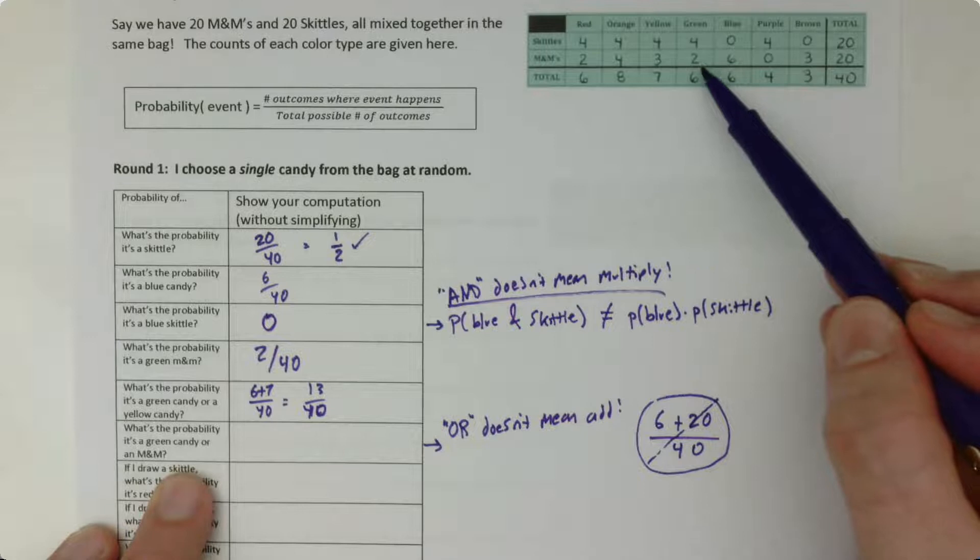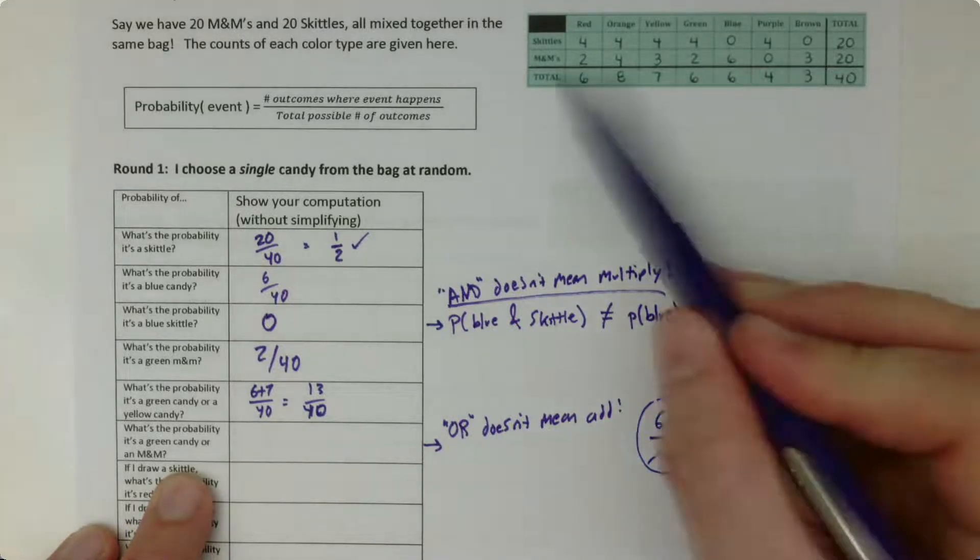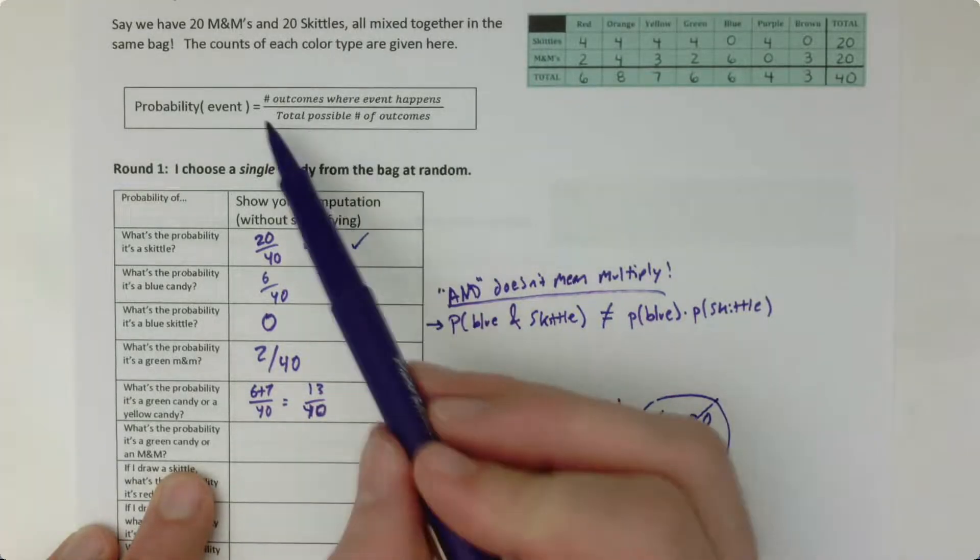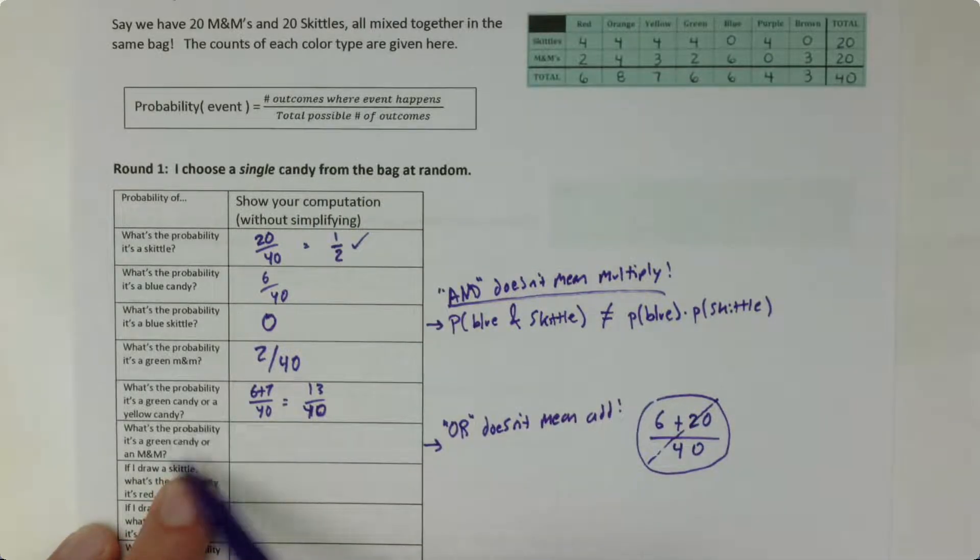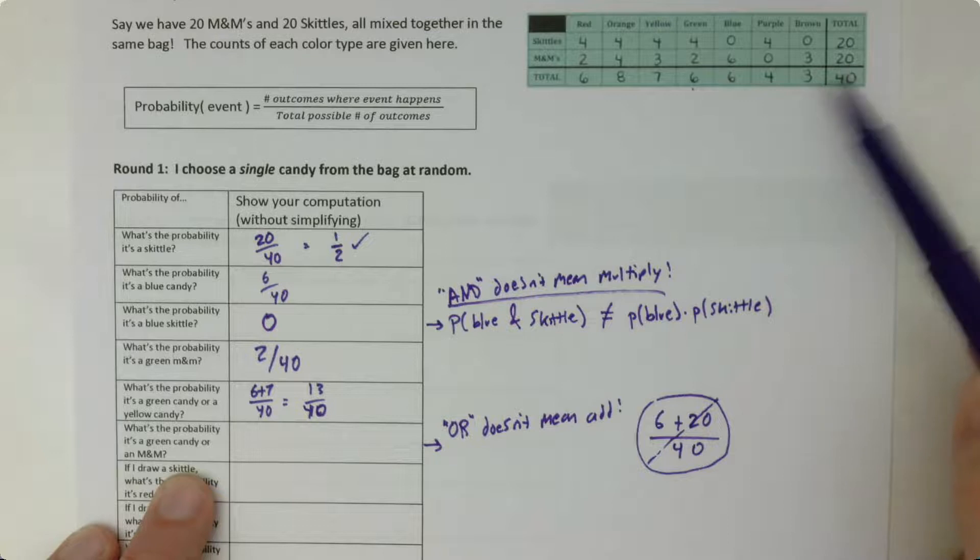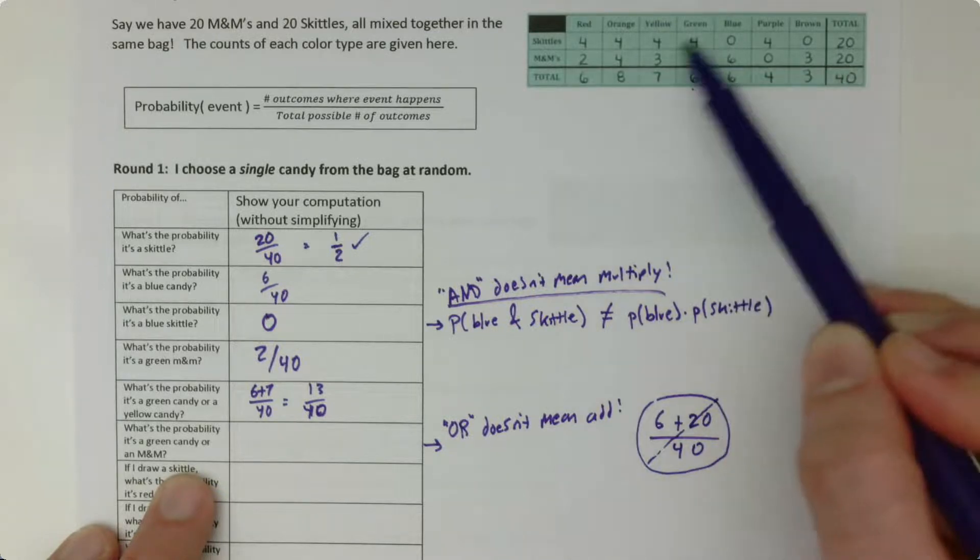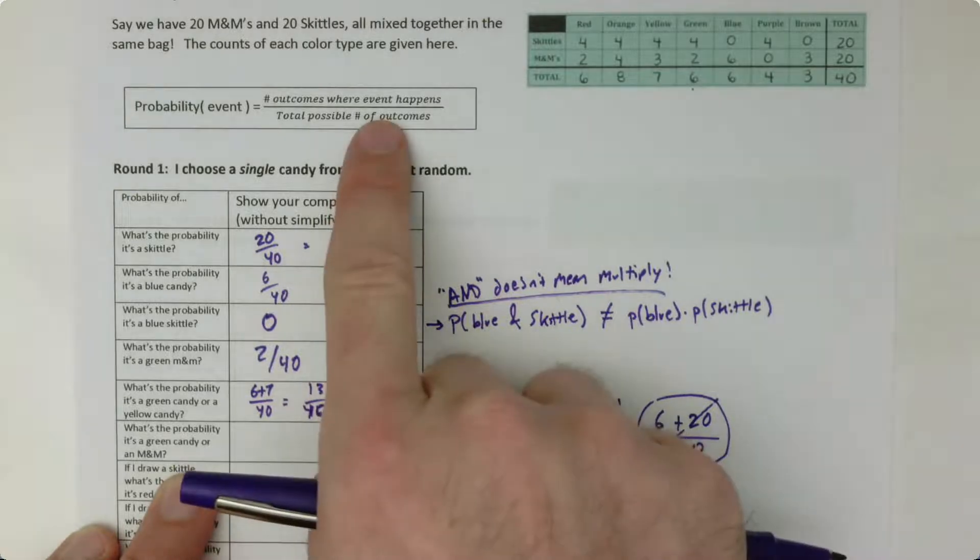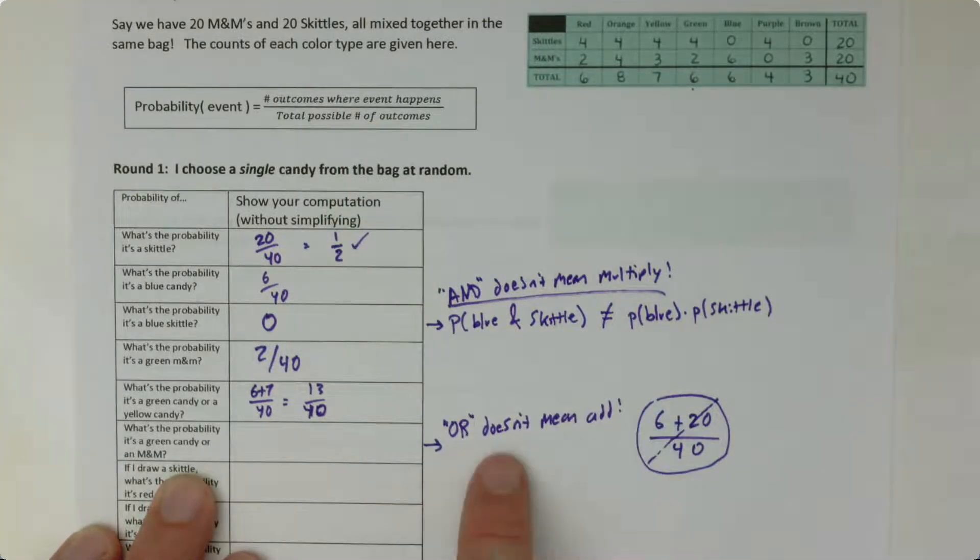The problem here is that we have counted the 2 green M&Ms twice. So we counted the 2 green M&Ms as part of the 6 green candies, and then we counted them again as part of the 20 M&Ms. So what we really want in the numerator here is the total number of candies that are described by this phrase, that are either green or M&Ms. But it's just not true that there are 26 candies that are described that way. There's actually only 24. So think about it this way. There are 4 green Skittles, and then there are 20 M&Ms. And so that covers all the possibilities, just those 20 M&Ms plus the additional 4 green Skittles. So again, rely on your natural understanding of what you're trying to count, rather than rules like OR means ADD. So the final answer there is 24 out of 40 is the probability.